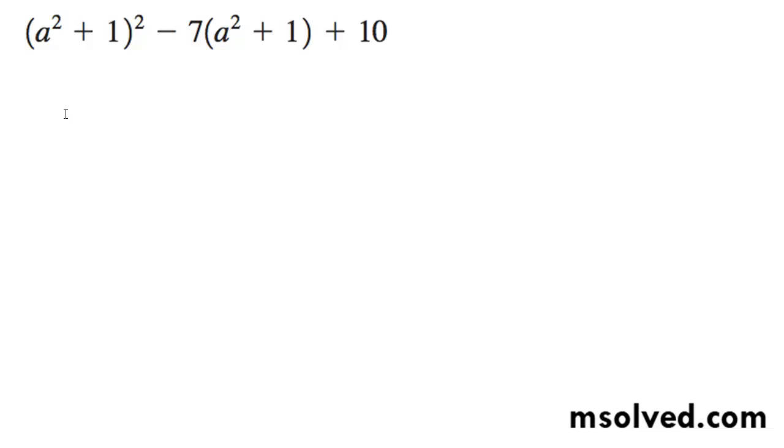We're going to simplify this factorization. I can pull a squared plus 1 out of both of them and I get quantity a squared plus 1 minus 2, and then 5 a squared plus 1 plus 10. This should be minus.